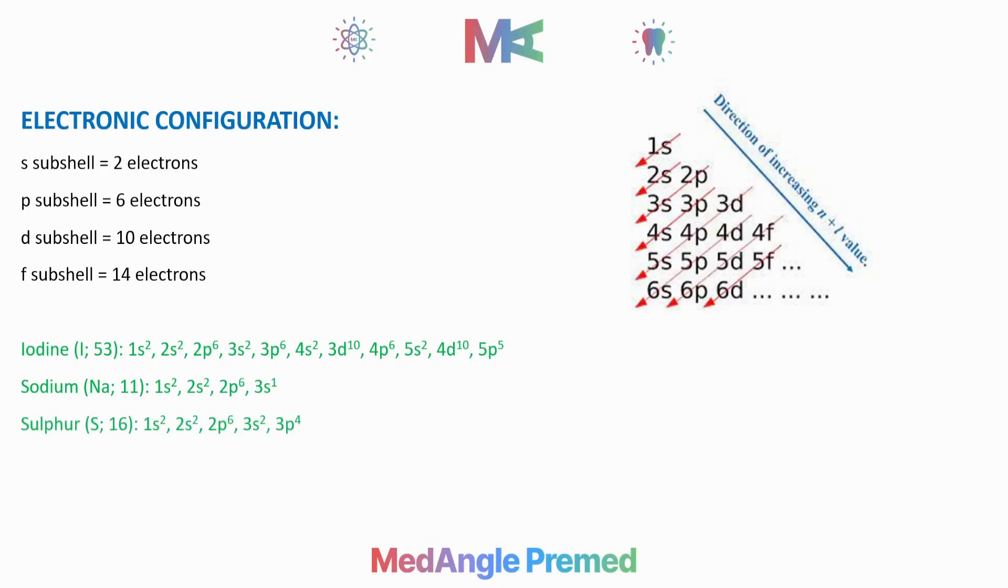Sulfur has atomic number 16. Its electronic configuration is 1s², 2s², 2p⁶, 3s², 3p⁴. The question asks for 3p⁵, so sulfur is not the answer.